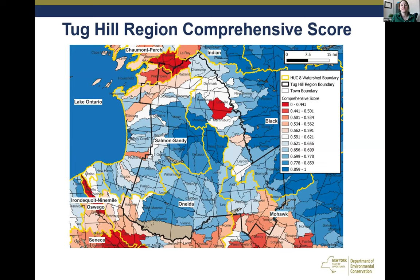Promoting sustainable development and protecting source waters — these areas include headwaters of Salmon Creek in Redfield, Osceola, and Montague; the headwaters of Oneida Lake in West Turin and Martinsburg; and the headwaters of the Black River in Forestport and Remsen. Staff at the Tug Hill Commission are available to assist communities with their riparian project planning and protection projects as well.